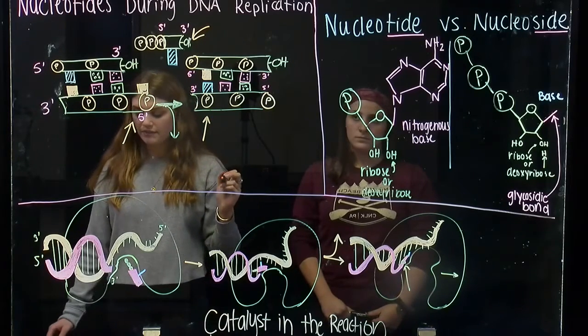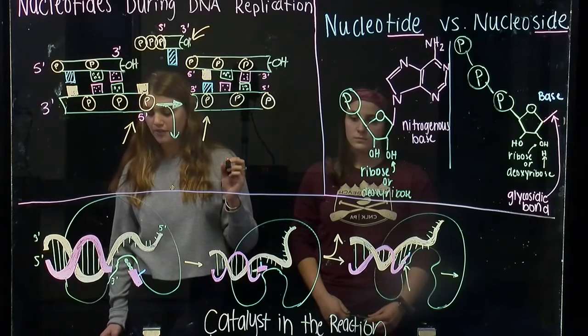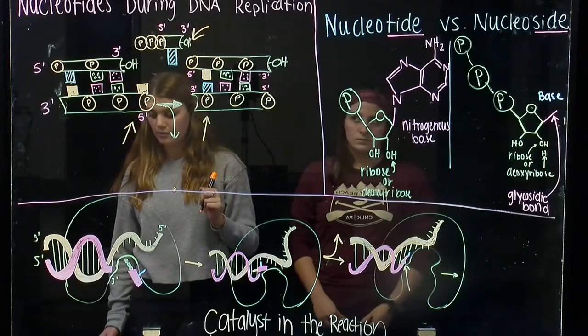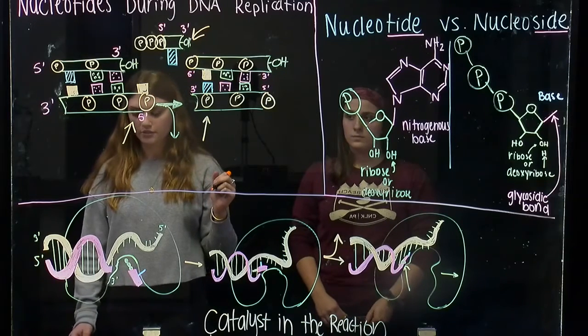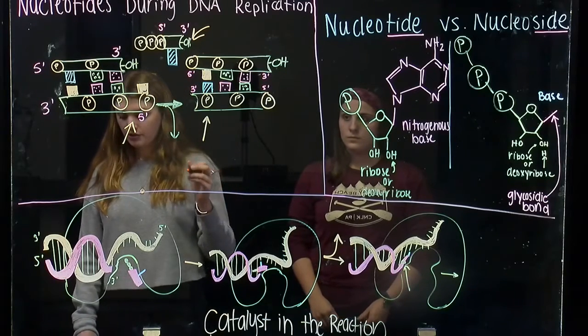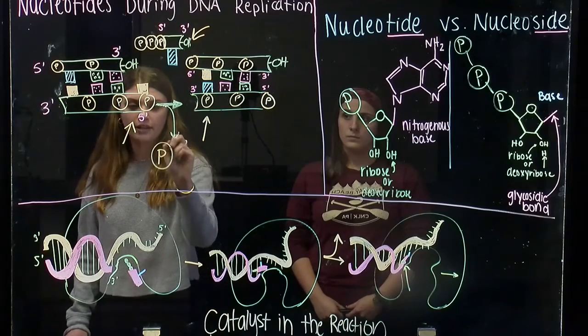The hydrolysis of a phosphate bond in the incoming nucleoside triphosphate is energetically favorable. And the release of the phosphate provides the energy for the polymerization reaction. This yields two molecules of inorganic phosphate.